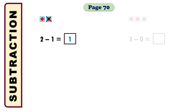In the next example it says 3 minus 0 equals what? First of all we will take 3 boxes. As you can see, we have to subtract nothing — 0 means nothing — so we will not cross any box. How many boxes are remaining? There are 3 boxes remaining, so the answer will be 3. That means 3 minus 0 is equal to 3.